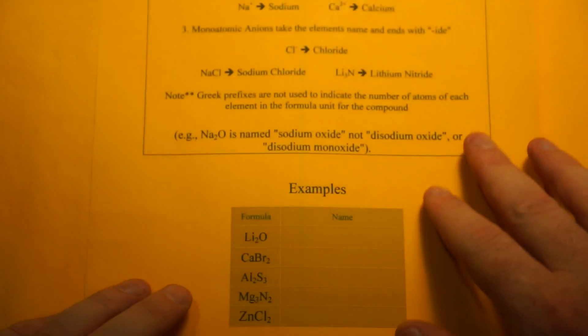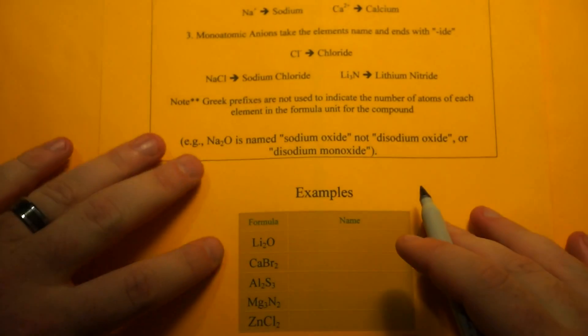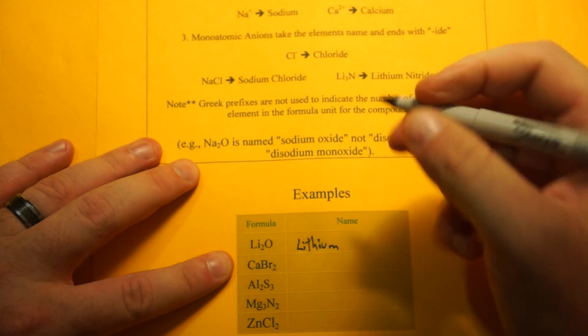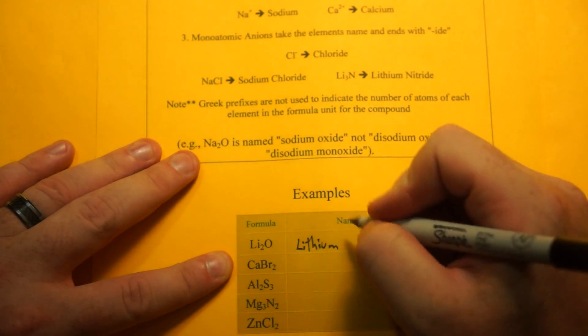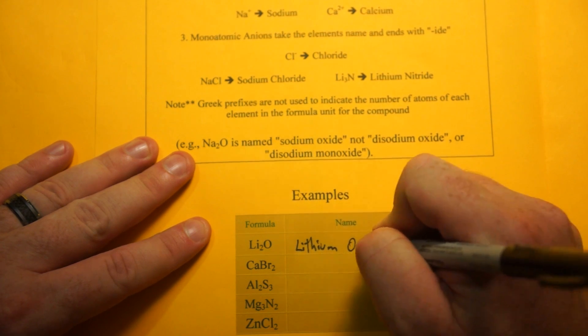Let's name these. I have five examples here. All you do is you name your first element, so Li2O: Li is lithium, and O is oxygen, but we're going to put that "-ide", and we're going to make it sound correct, so it's going to be oxide.